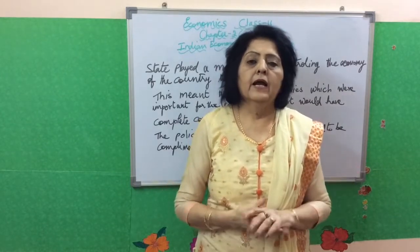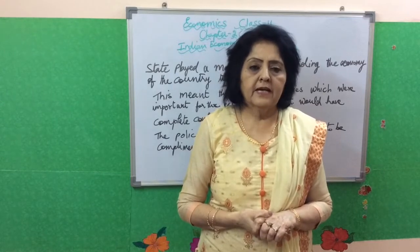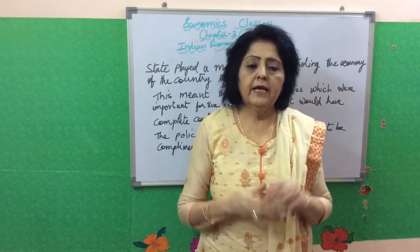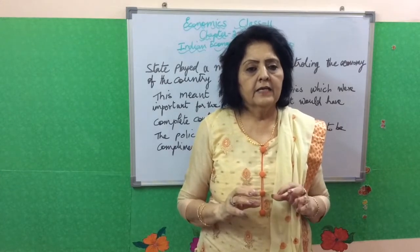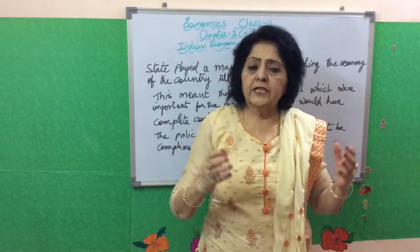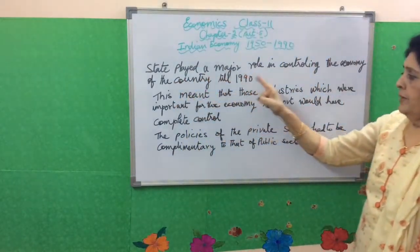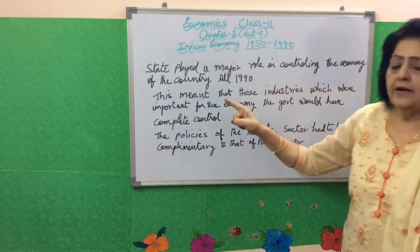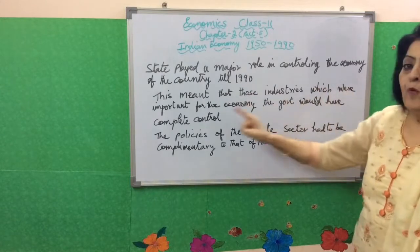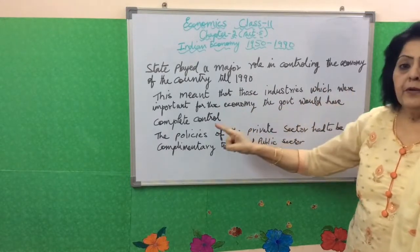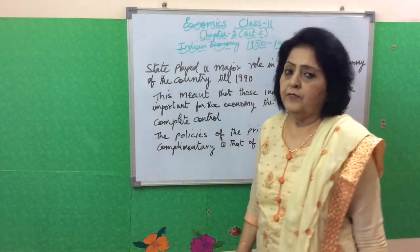Under this scenario, the public sector and the state played a major role in controlling and commanding the economy of the country. The private industrialists were not interested in investing their money as the market was not very big. The second most important reason is that the government wanted equal distribution and variety of industry in all the regions of the country. The state played a major role in controlling the economy till 1990. Those industries which were important for the economy came under complete government control, and the policies of the private sector had to be complemented to those of the public sector.